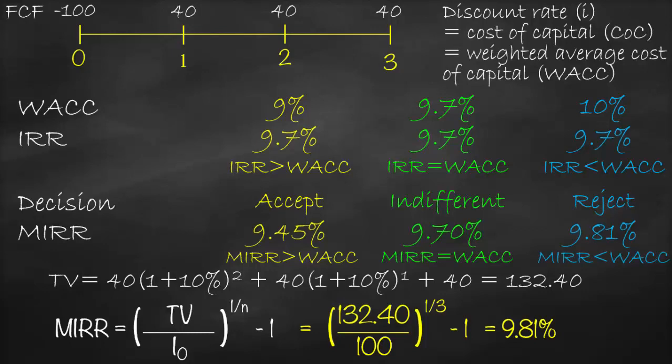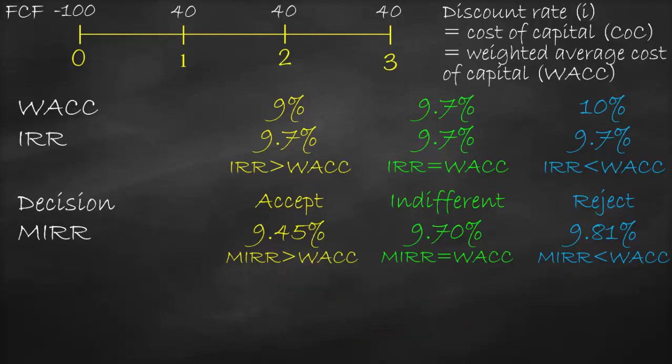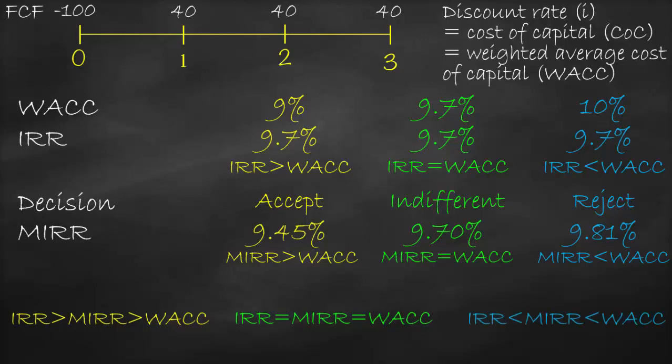Can we establish a relationship between IRR, MIRR, and WACC? Yes. If we accept the project: IRR > MIRR > WACC. If we are indifferent: IRR = MIRR = WACC. If we reject the project: IRR < MIRR < WACC. Capital budgeting is straightforward because these relationships are consistent: if NPV is positive (NPV > 0), you know the profitability index will be greater than 1, IRR > WACC, and MIRR > WACC. The same logic applies for indifferent and rejection scenarios.